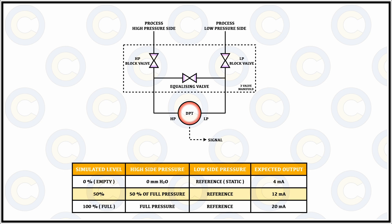Since there are zero and span setting switches on the DP transmitter, if there is an erroneous value during either of the tests then we can use these knobs or switches to adjust the current that is flowing across the circuit and showing as the final output.